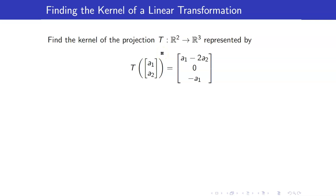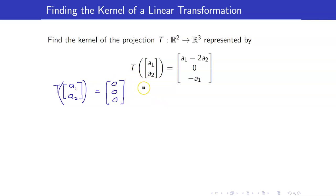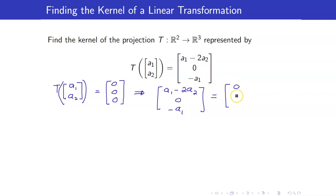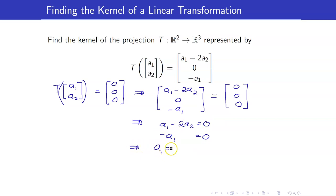Here is another example. We have T(A1, A2) mapped to an element in R3. We are interested in elements in R2 which get mapped to the zero vector in R3. By definition, T(A1, A2) = (A1 − 2A2, 0, −A1), and this must equal the zero vector. So A1 − 2A2 = 0 and −A1 = 0, which means both A1 and A2 must equal zero. Therefore, the kernel of T is just the zero vector.